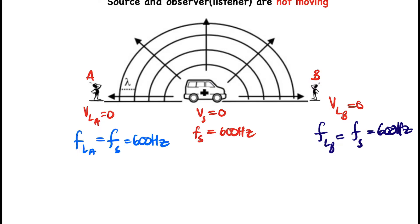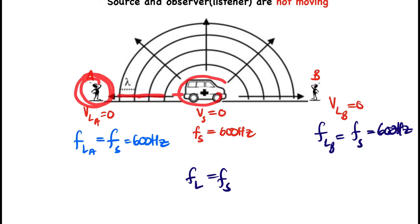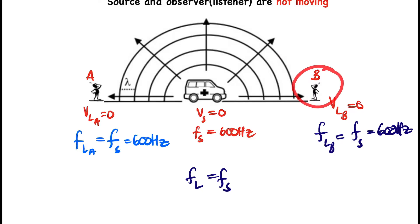This is the same situation if you are in a car as a listener and the car is moving — you and the car move with the same velocity, so your frequency as a listener equals the frequency of the source. Consider an ambulance emitting sound through its siren. Looking at the wavefronts, the wavelengths between listener A and the source are equivalent, and the wavelengths in front of the car between observer B and the source are also equal.